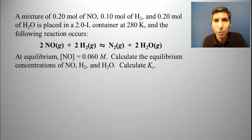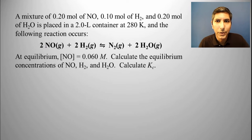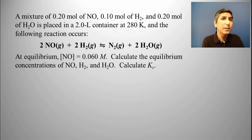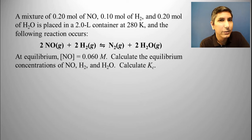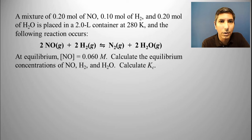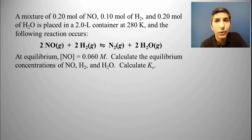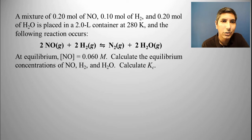We're going to work several problems together in this video so that by the end you should feel pretty comfortable solving equilibrium problems with the ICE box method. Here's the first one. It says that a mixture of 0.20 moles of NO, 0.10 moles of H2, and 0.20 moles of water is placed into a 2.0 liter container at 280 kelvins, and the following reaction occurs. At equilibrium, the concentration of NO equals 0.060 moles per liter. Calculate the equilibrium concentrations of NO, H2, and water, and calculate Kc.